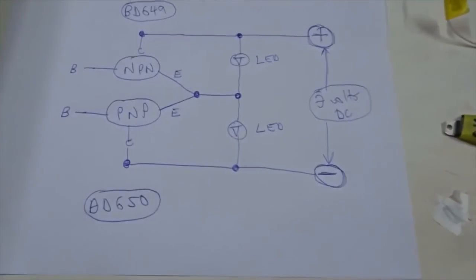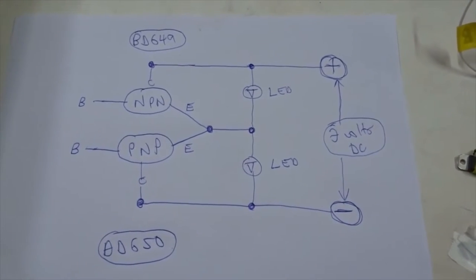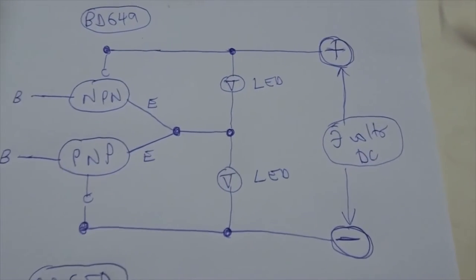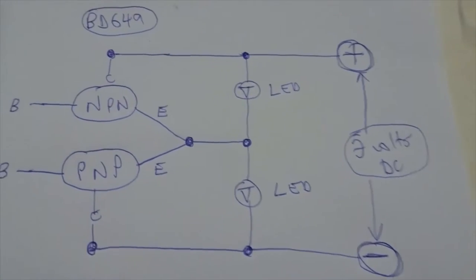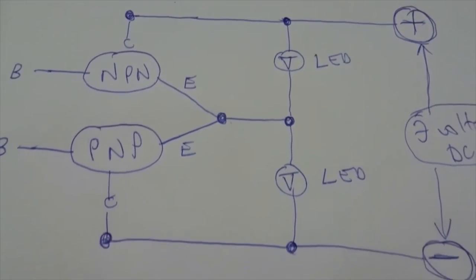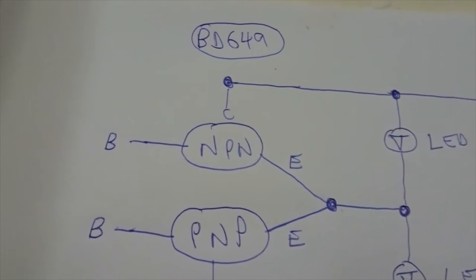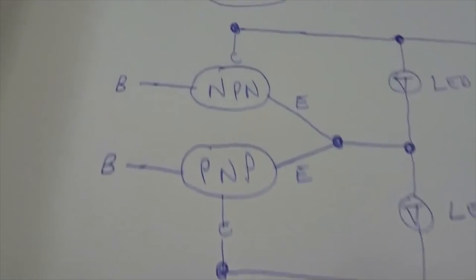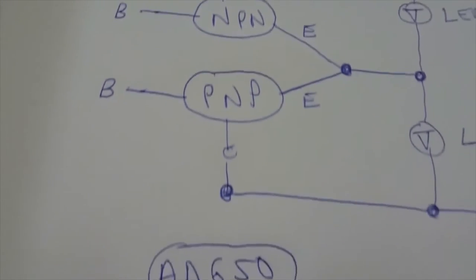It only has four parts. So even a monkey could build it, a border collie could build it. Here it is, just three or four volts from a DC power supply or battery, two LEDs, and two transistors, and there's nothing else. BD649, BD650.